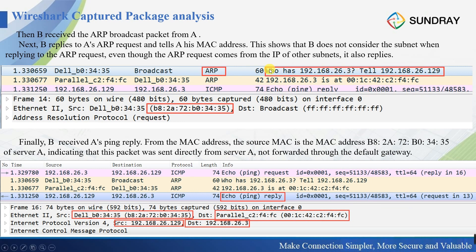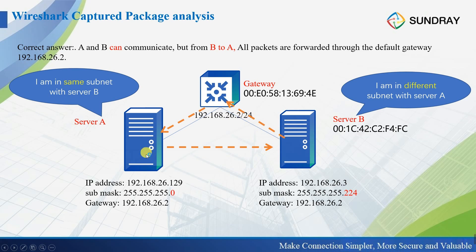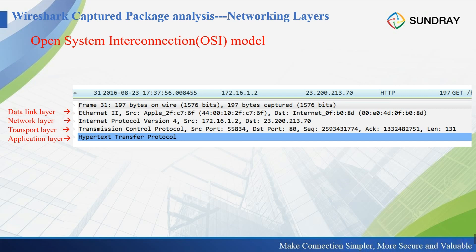Continuing on Server B, we see a broadcast from Server A asking for Server B's MAC address. Server B replies to that ARP request. Then we receive an ICMP echo reply from Server A with destination IP as Server B. The conclusion is: Server A and Server B can communicate, but all packets from Server B to Server A are forwarded through the default gateway.